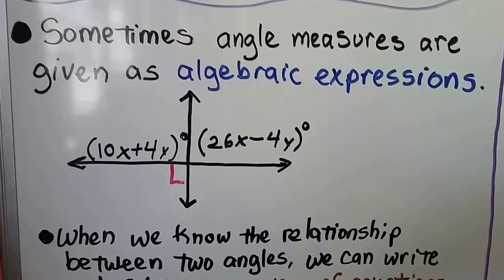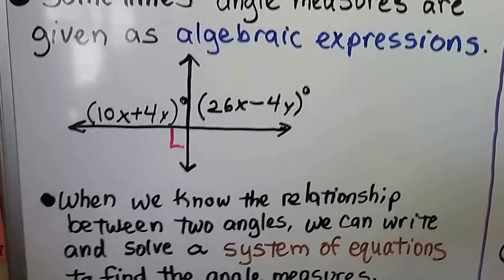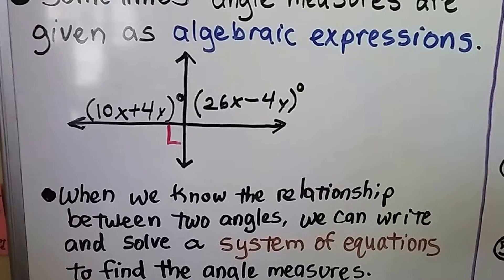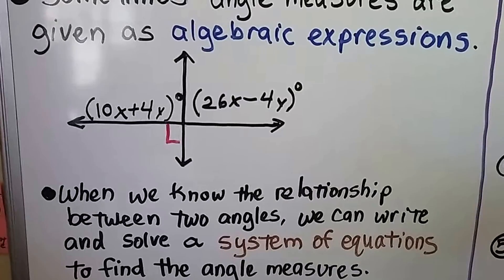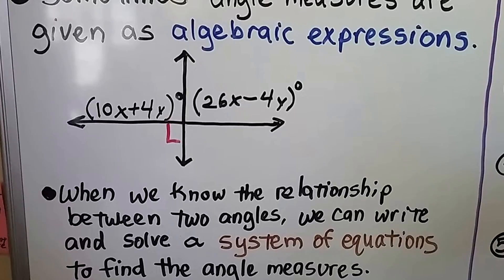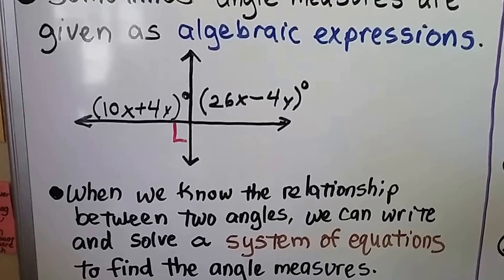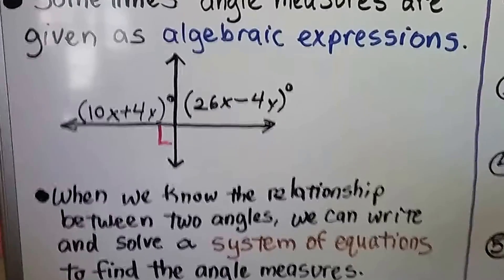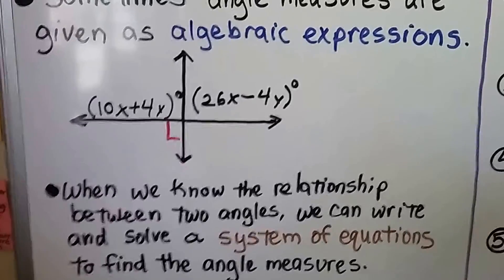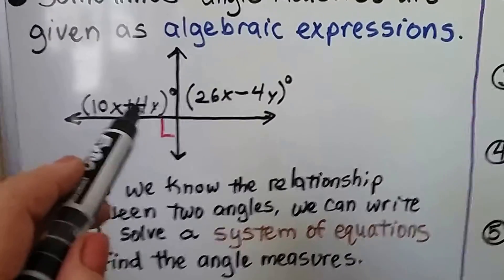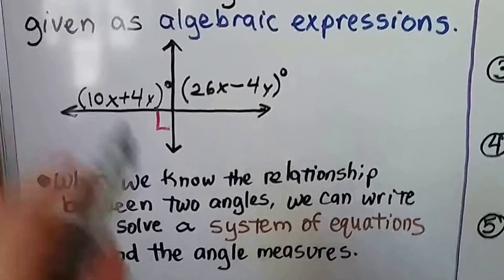Sometimes, angle measures are given as algebraic expressions. When we know the relationship between two angles, we can write and solve a system of equations to find the angle measures. So here, the measure of these angles are given as algebraic expressions. Look at that, 10x plus 4y. That's the angle measure for this angle.